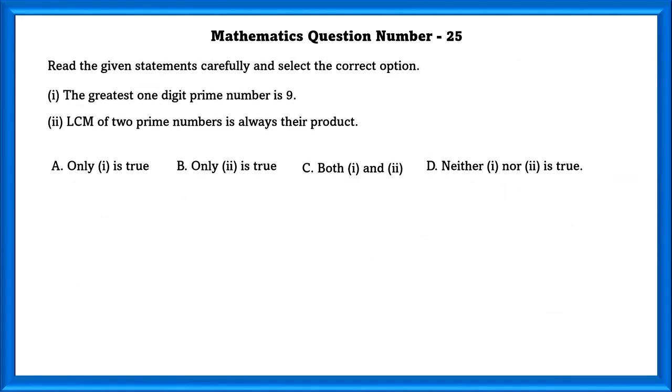Mathematics question number 25. Read the given statements carefully and select the correct option. The greatest 1 digit prime number is 9. The greatest 1 digit prime number is 7. LCM of 2 prime numbers is always their product. Yes, that is true.